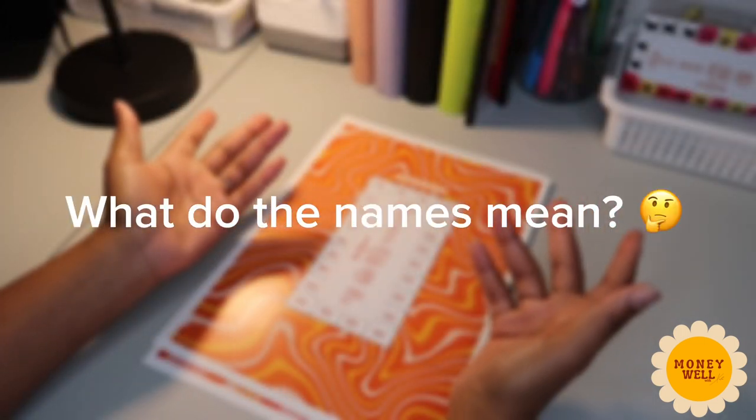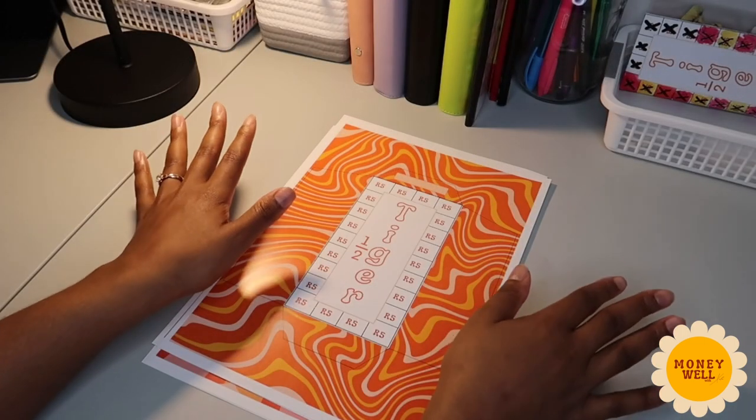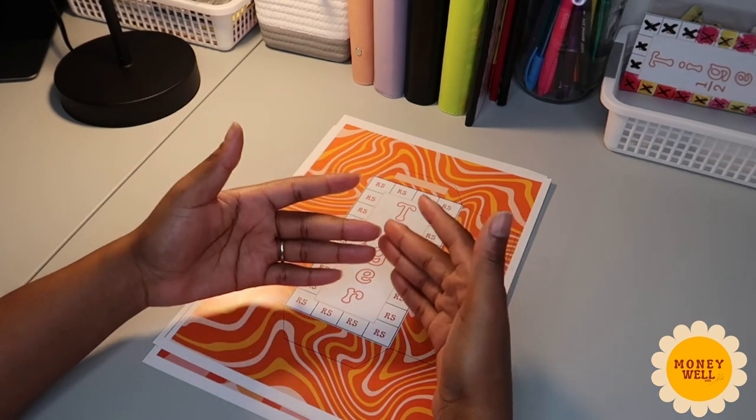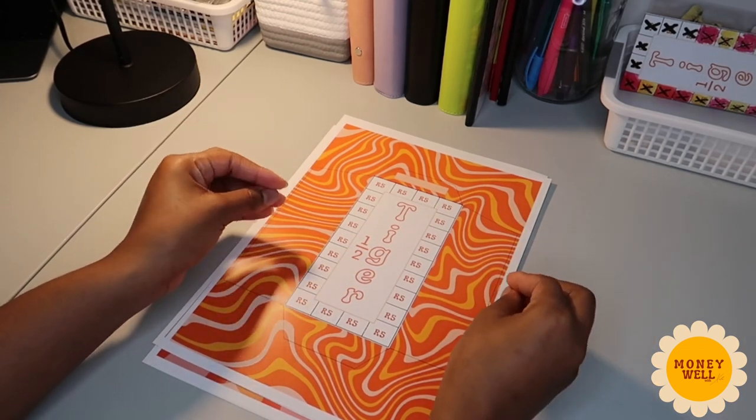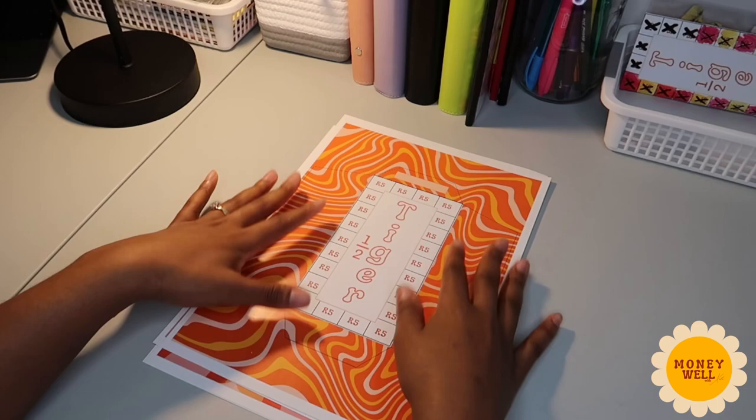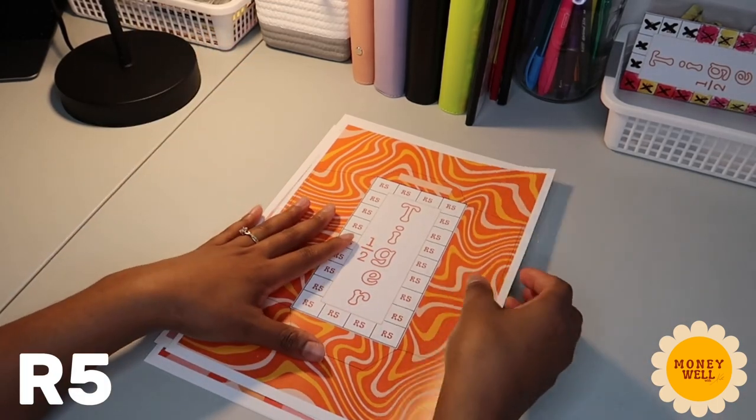Now to give you context on what the names mean, many townships have different slang names for a number of things and money is one of them. So you'll find the half tiger, that means it's five rand, tiger is 10 rand.